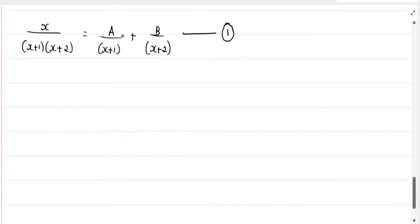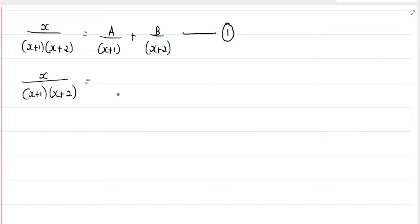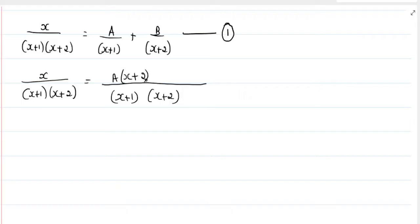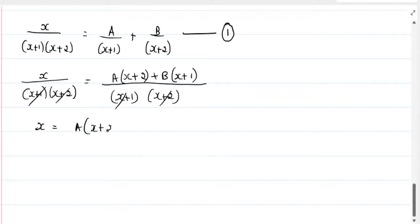Taking the LCM, we get x divided by (x plus 1)(x plus 2) equal to A(x plus 2) plus B(x plus 1), all over (x plus 1)(x plus 2). Since denominators are common on both sides, we cancel them, leaving x equal to A(x plus 2) plus B(x plus 1).